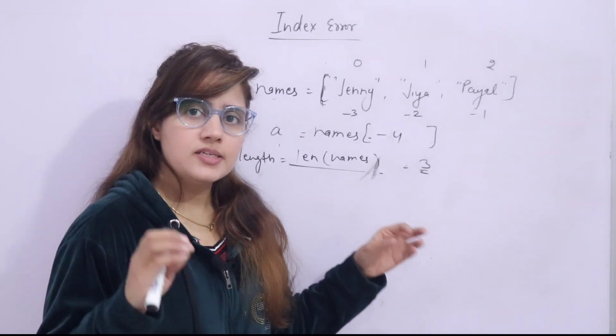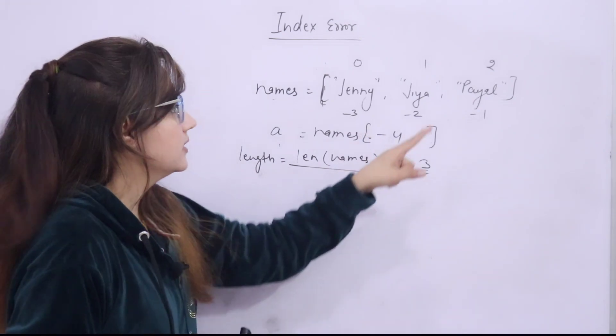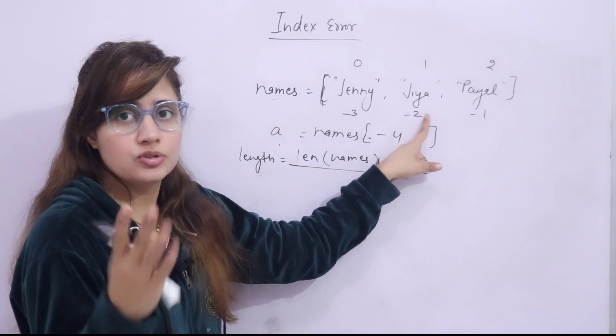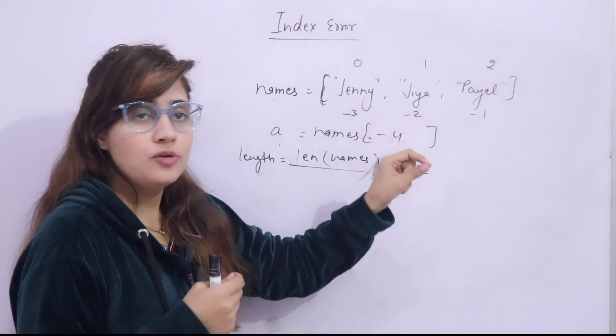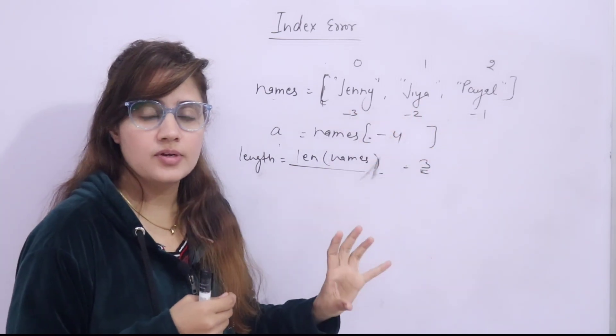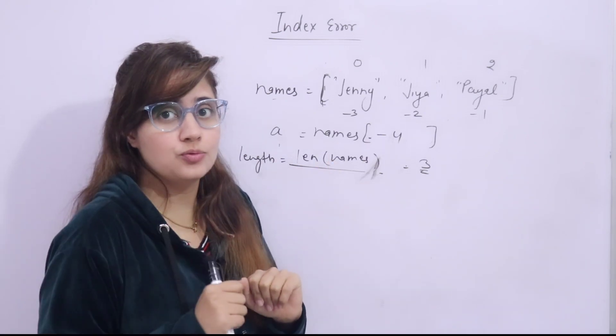So we can say basically index error is an exception in Python, which occurs when you try to access an element from the list, from the list or tuple or set or strings also, from the index which is not present in the list. At that time index error raise. Now let me just show you this thing with example. Practically I will show you.